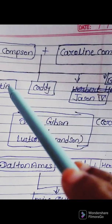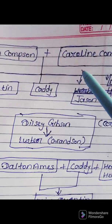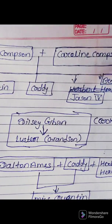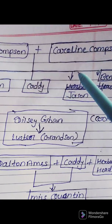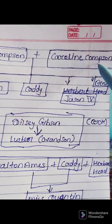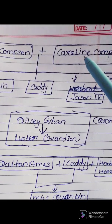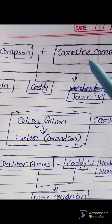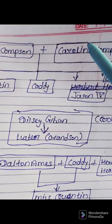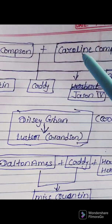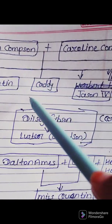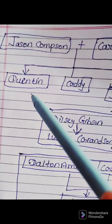Caroline Compson is also a main character. She is a woman who could have been a good wife. She stays in bed and has a daughter among her children.